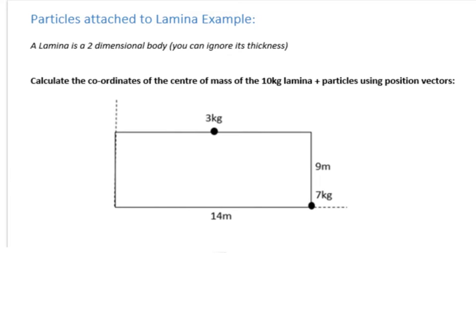So we've got a lamina here, and a lamina is just a two-dimensional object, so its thickness is considered negligible. Now we want to know the coordinates of the center of mass of the 10 kilogram lamina with particles attached at each of those places, and instead we're going to use position vectors to solve this. So last time we looked in two directions separately, this time I want to use position vectors to make it a simpler process. So let's draw in our vectors.